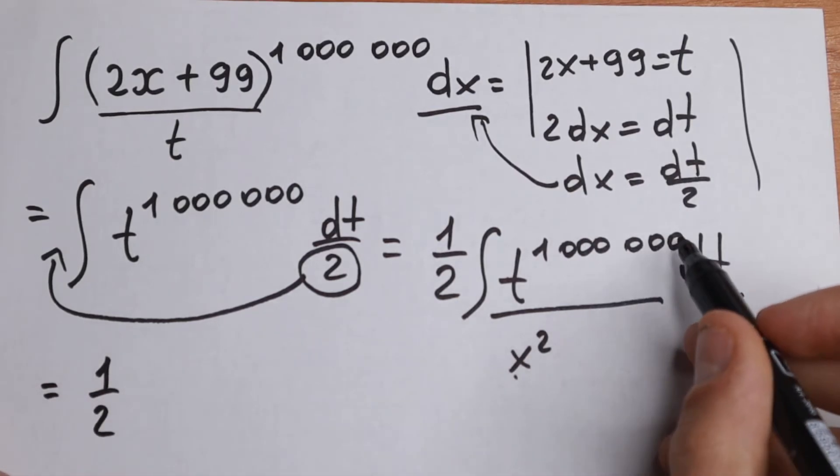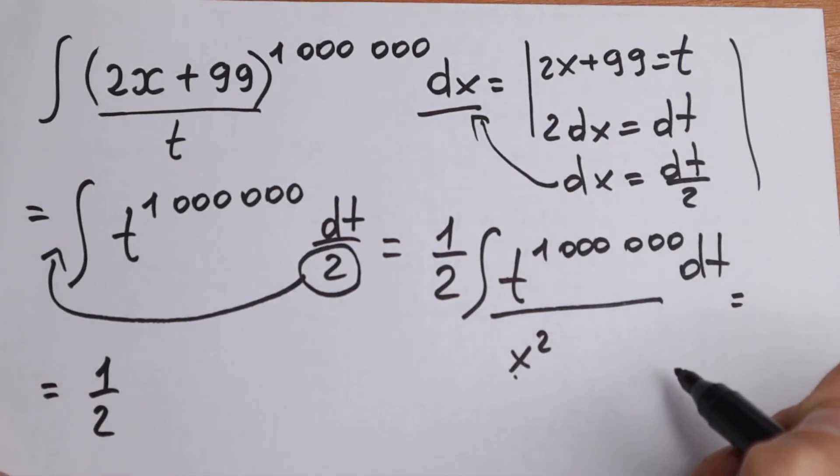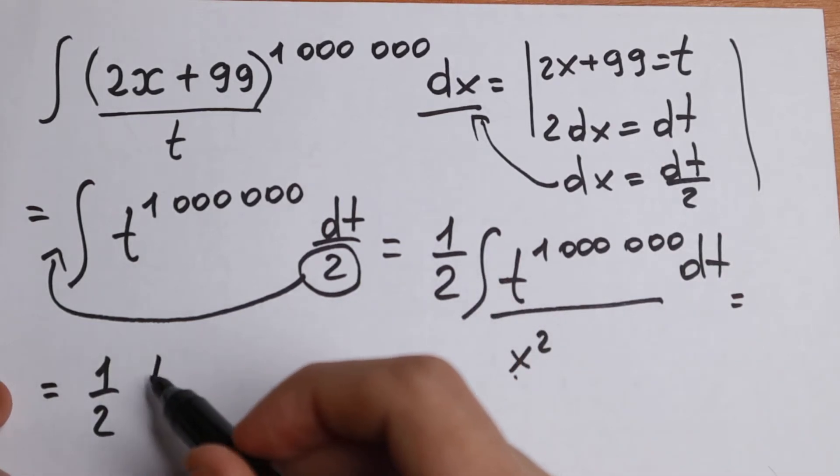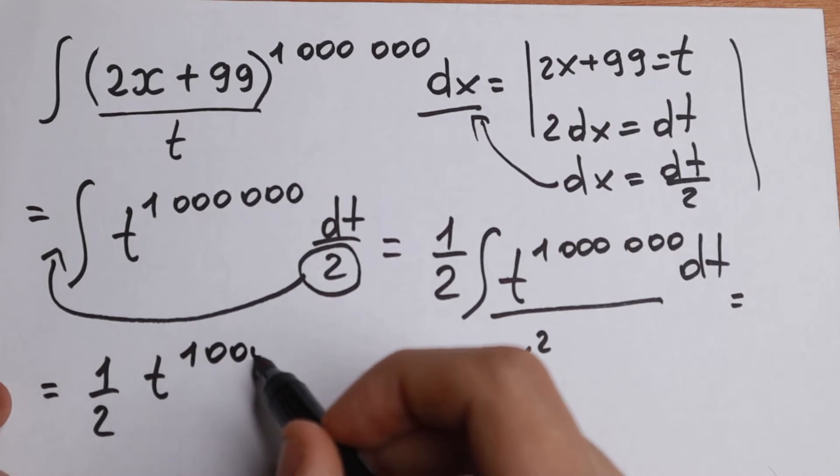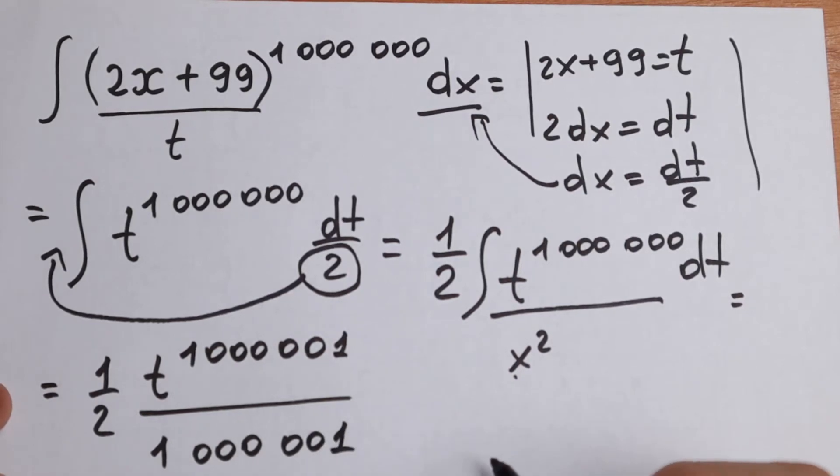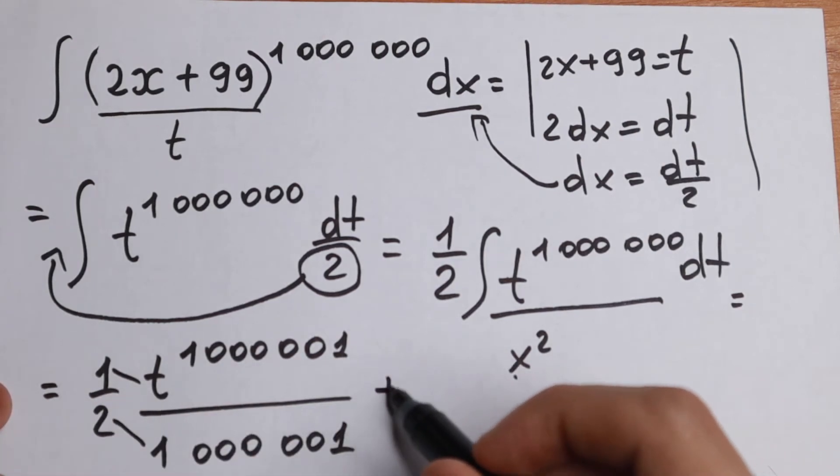We will have 1 half and we need to add 1 and divide by this power. So as a result, if we integrate this, we will have t to the power 1,000,001 over 1,000,001. So this is our denominator, and plus c.